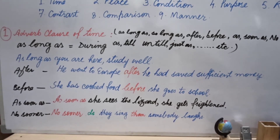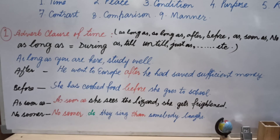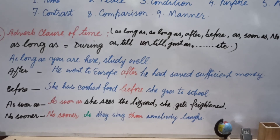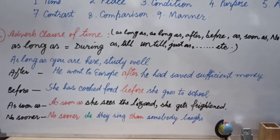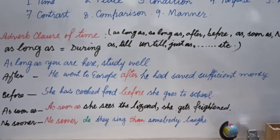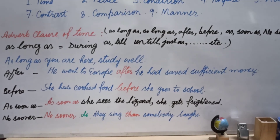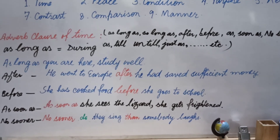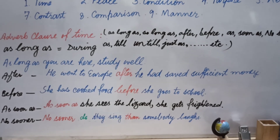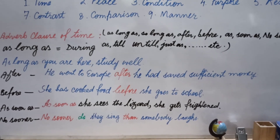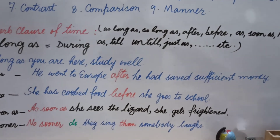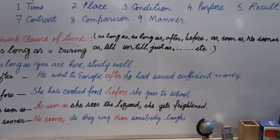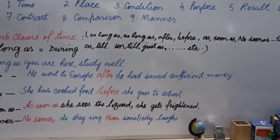Now let's take 'no sooner than.' For example: 'No sooner do they ring than somebody laughs.' If you use 'no sooner' in the beginning, you place the helping verb right after 'no sooner' before your subject — this is compulsory. You must also use 'than' in the middle of the sentence. So whether the tense is past indefinite, present indefinite, or perfect, you use the helping verb in the beginning — for example: 'No sooner did she come' or 'No sooner does he come' — then write 'than' and the next part of the sentence.